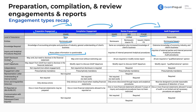Regarding GAAP disclosures that are omitted: for preparations you may omit them but must disclose that in the financial statements; for compilations you may omit most without restricting the use of the report; for reviews all disclosures are required or you must modify the review report; for audits all disclosures are required or you must give a qualified or adverse opinion. Qualified means not pervasive — one problematic item — while adverse means pervasive, affecting the financial statements as a whole.